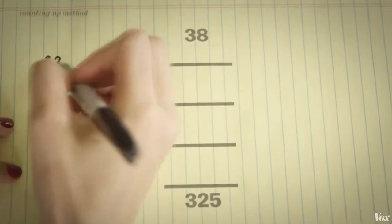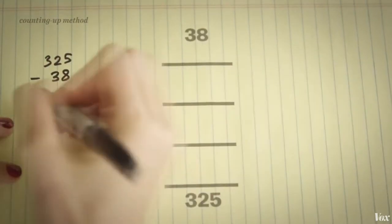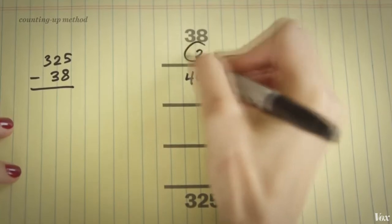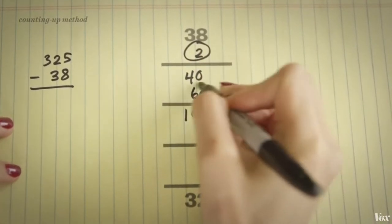There's another method called counting up. 38 to 40. Then from 40, you want a round number, which is 100.